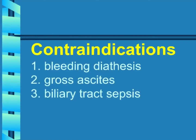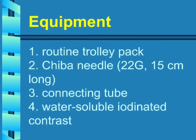Contraindications include: one, bleeding diathesis; two, gross ascites; three, biliary tract sepsis. Equipment required includes: one, routine trolley pack; two, Chiba needle, 22 gauge, 15 centimeters long; three, connecting tube for water-soluble iodinated contrast.